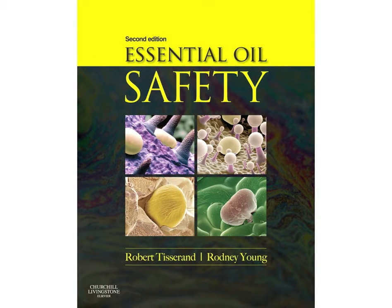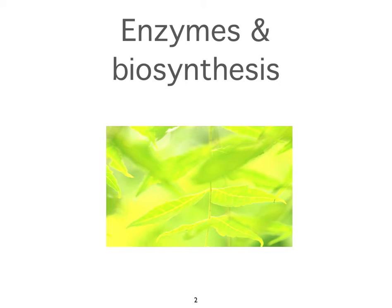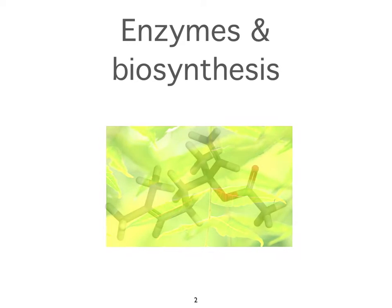So how does the plant create these things? This is very interesting because it reflects on what happens in the body. Plant cells create essential oil constituents — not essential oils, really. They create essential oil constituents, and when those are together in one place, that's what we call an essential oil. Interestingly, each oil gland contains eight secretory cells — just eight that create the essential oil.